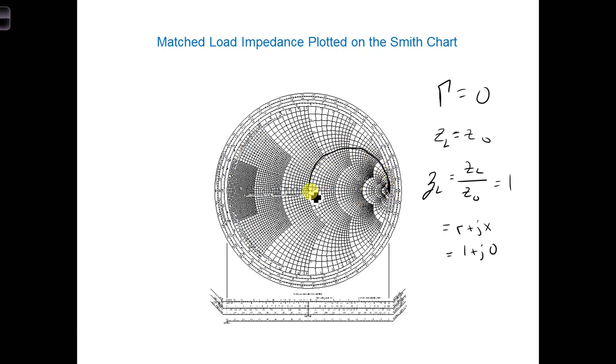You can see this circle is labeled 1. And when we have a real impedance, we're right on the horizontal axis. So we can see that this crosses right at this point.